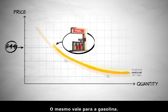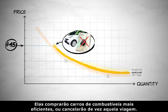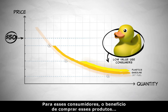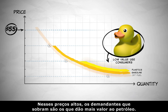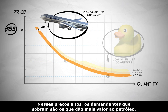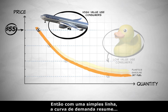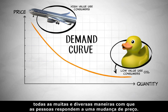Same goes for gasoline. As the price rises, people will economize. They will buy more fuel-efficient cars or forego that road trip completely. For these consumers, the benefit of buying these products is too little to justify the cost. At these high prices, the demanders that are left are the ones who value oil the highest. For them, the benefit of having planes that fly outweighs the increased cost. They still demand oil. So with a simple line, the demand curve summarizes all the many and diverse ways that people respond to a change in price.